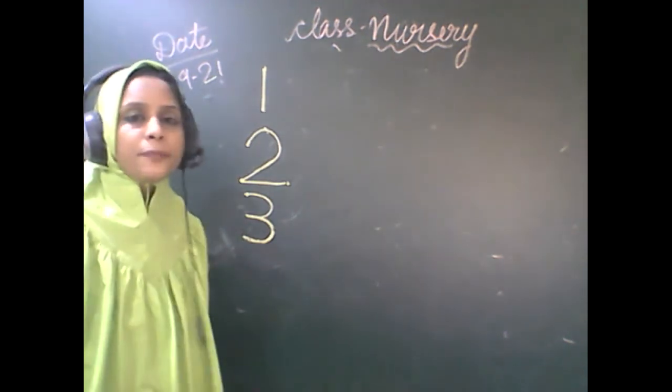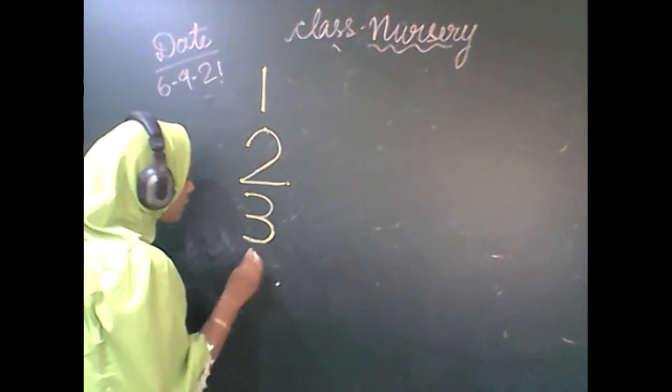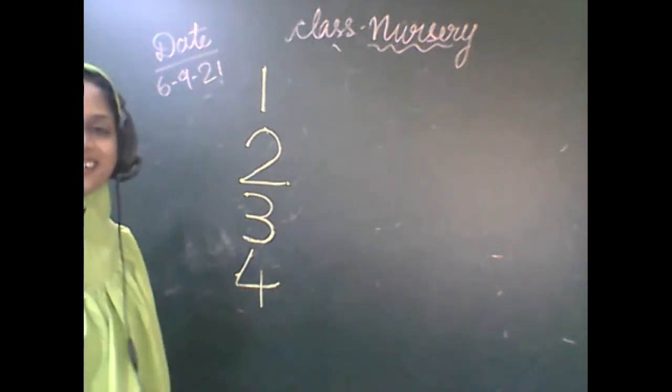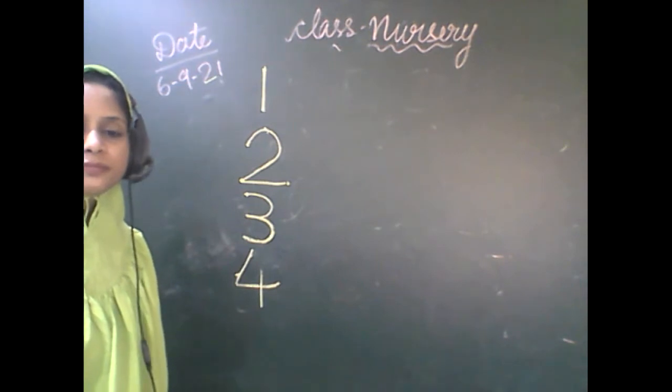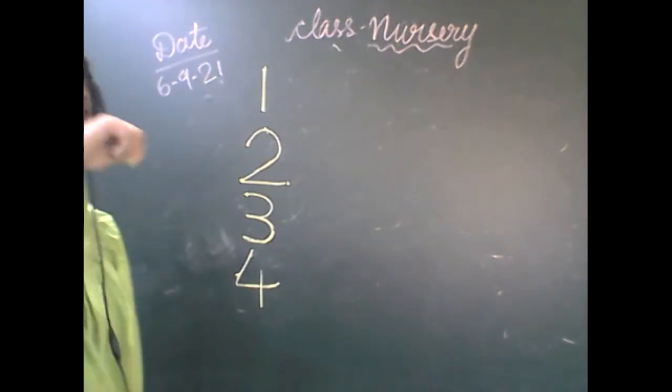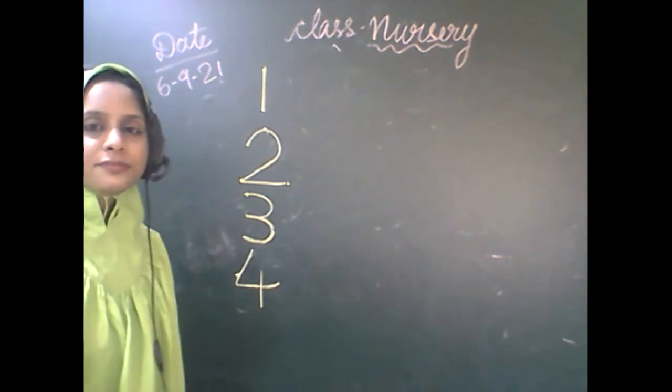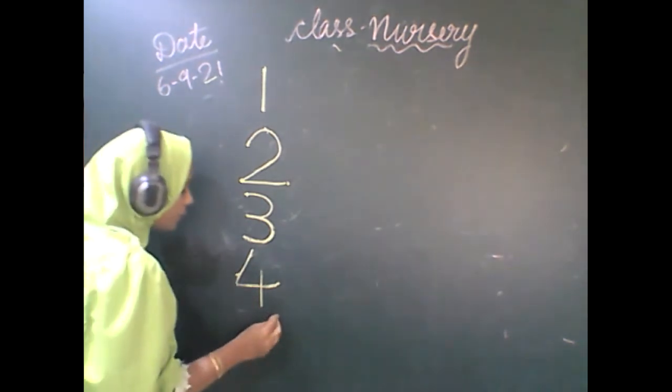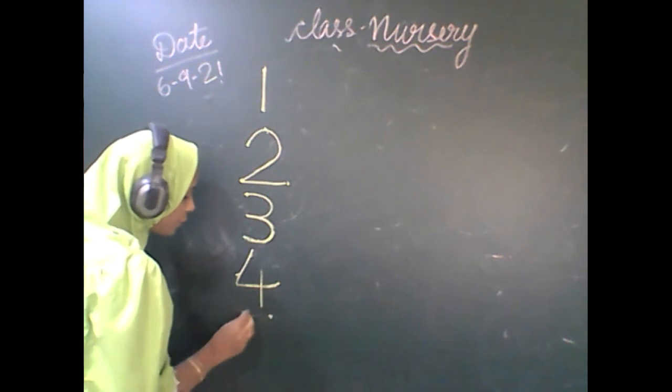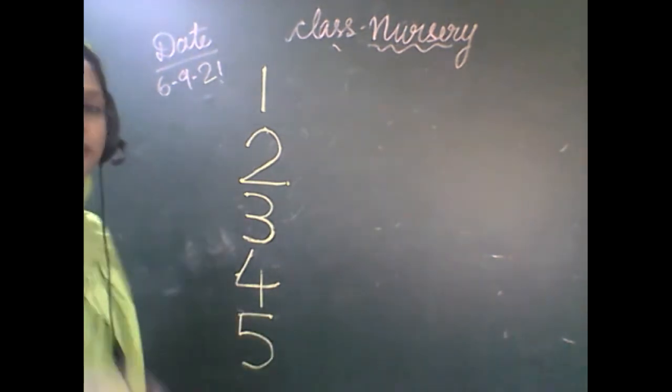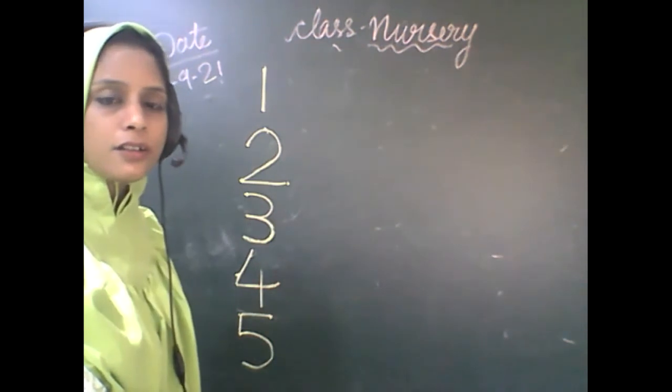After three, four. You have to make one slanting line, sleeping line, and one standing line that makes number four. After four, you have to write number five. First of all, make a sleeping line, then one small standing line and curve. Number five.